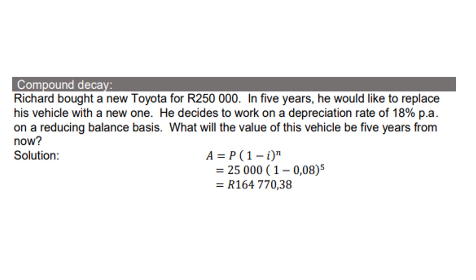Let's look at compound decay. Richard bought a Toyota for R250,000. In 5 years he would like to replace his vehicle with a new one. He decides to work on a depreciation rate of 18% per annum on a reducing balance basis. What will the value of the vehicle be 5 years from now? For depreciation it is 1 minus I, so: 250,000 multiplied by (1 minus 0.18) to the power of 5. On the calculator, you get R164,770.38.